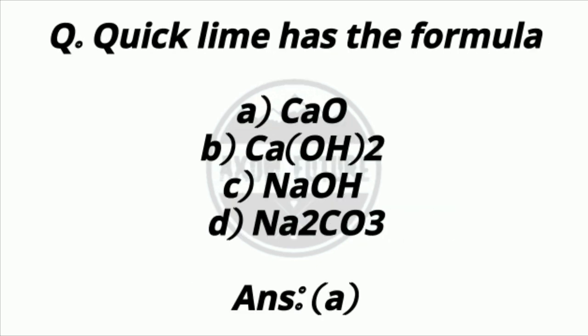Question 24. Quick lime has the formula? Answer: Option A — CaO, Calcium oxide.